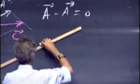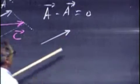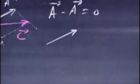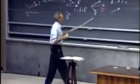So here is vector a. So which vector do I have to add to get zero? I have to add minus a.